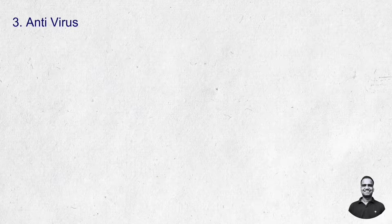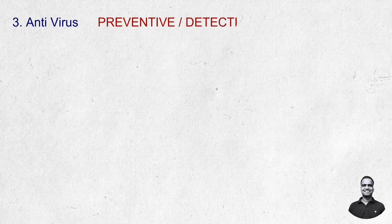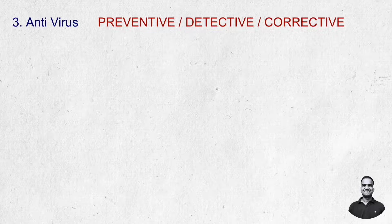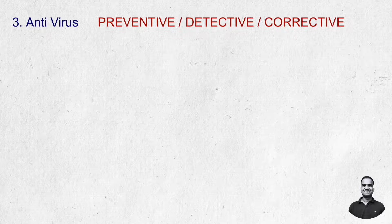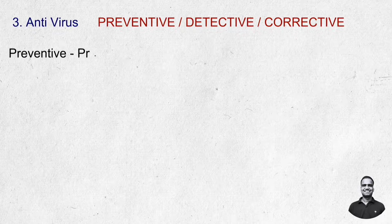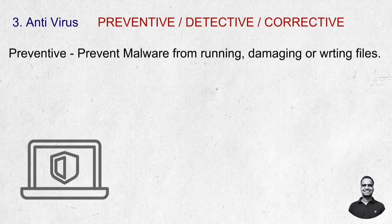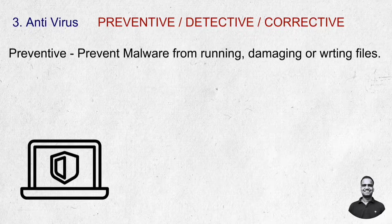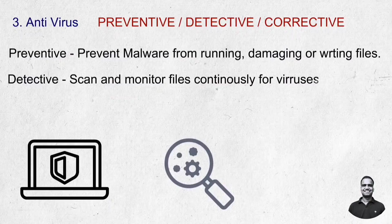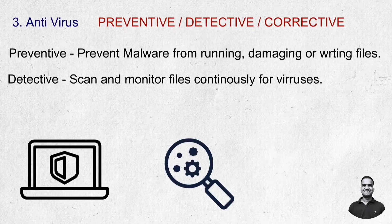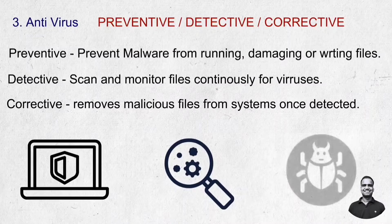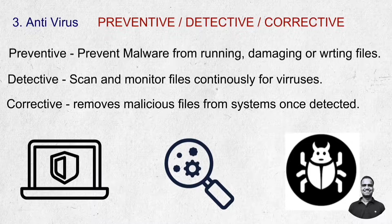Antivirus software can be a preventive, detective, and corrective control at the same time, depending on the function it is performing. Antivirus keeps the computer safe by preventing malware from running or damaging files — acting as a preventive control. It continuously scans and monitors files for viruses, making it a detective control. And when it removes malicious files once detected, it acts as a corrective control.